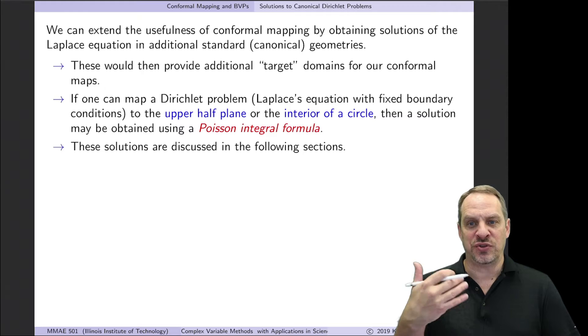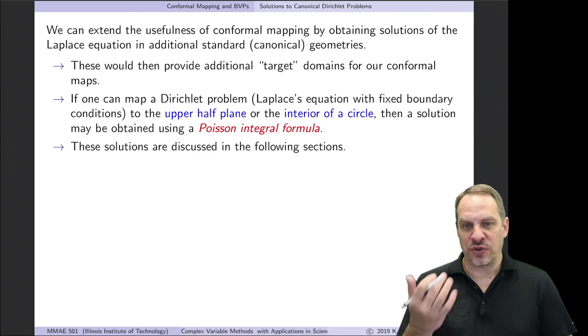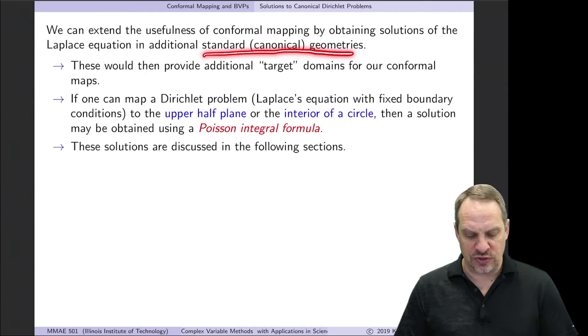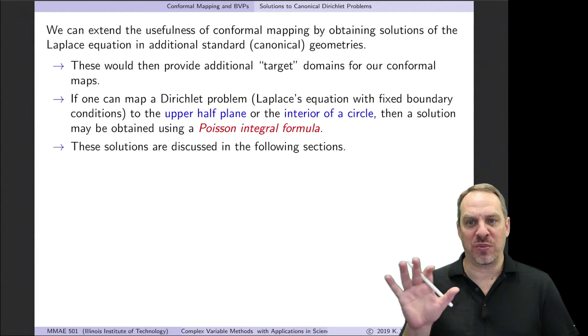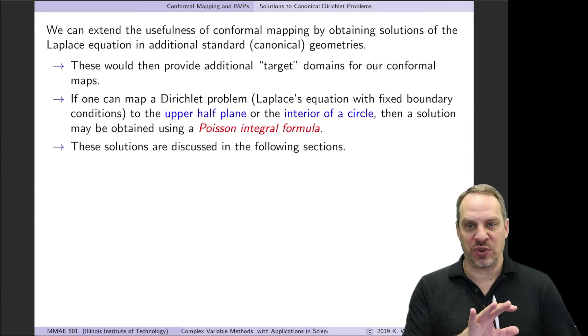In other words, we want to have additional targets for the conformal mapping from the z-plane to the w-plane. We call these standard or canonical geometries into which we can map our more complex domains and thereby solve Laplace's equation.